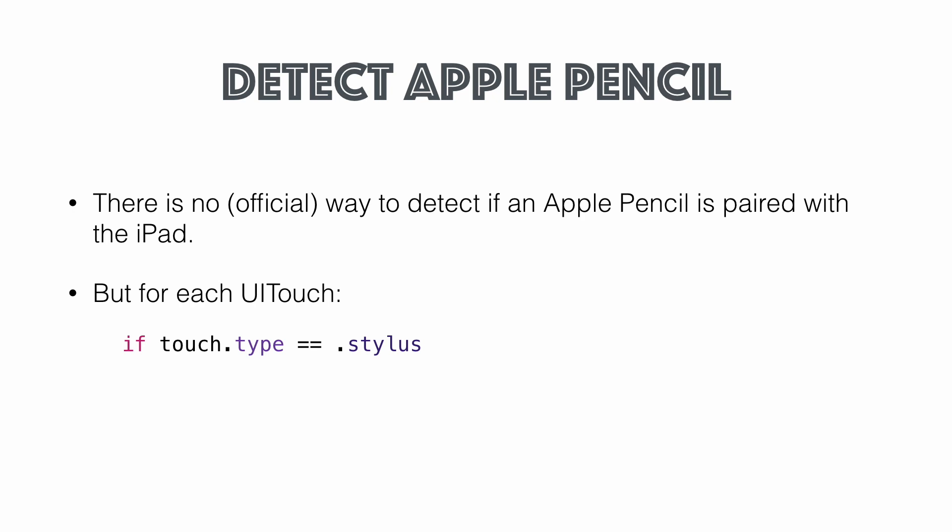We can use this type attribute to do some extra palm rejection. If you receive a touch point in the bottom corner from a finger and shortly thereafter see another touch point in the middle of the screen from the Apple Pencil, you can deduce the user plopped down their hand on the screen and then put the pencil down, and you can ignore that first touch from the palm.